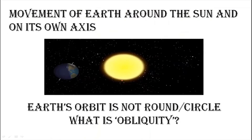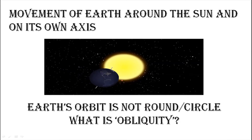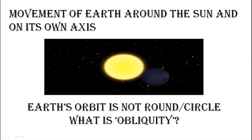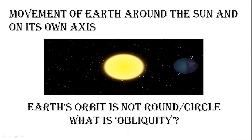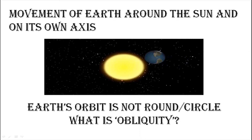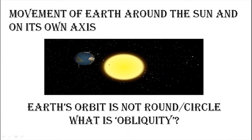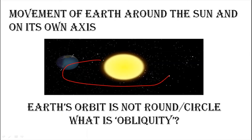The first topic we are going to discuss is the movement of the Earth, or the motion of the Earth. It is of two types: one is around the sun, and another is on its own axis. The movement of the Earth around the sun is called revolution. The Earth revolves around the sun on a particular path, and that path is called Earth's orbit.